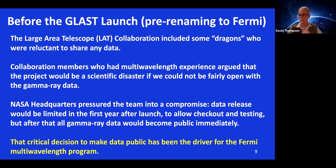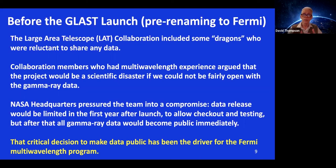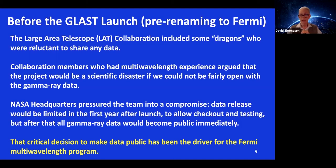NASA headquarters stepped in. NASA was paying a lot of the money for this, and they could apply some pressure — and they did. They pressured the team into a compromise: the data release would be limited in the first year after launch to allow checkout and verification. But after that, all the gamma-ray data would become public immediately. This critical decision to make data public immediately has been the driver for the Fermi-LAT multi-wavelength program.